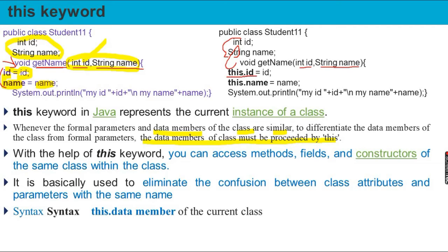If you want to use 'this.id', you can use the assignment operator to assign the value to the class variable. If you want to use 'this', you can use the value of the class. This is followed by id — if you want to use 'this.id', you can use the class variable value.